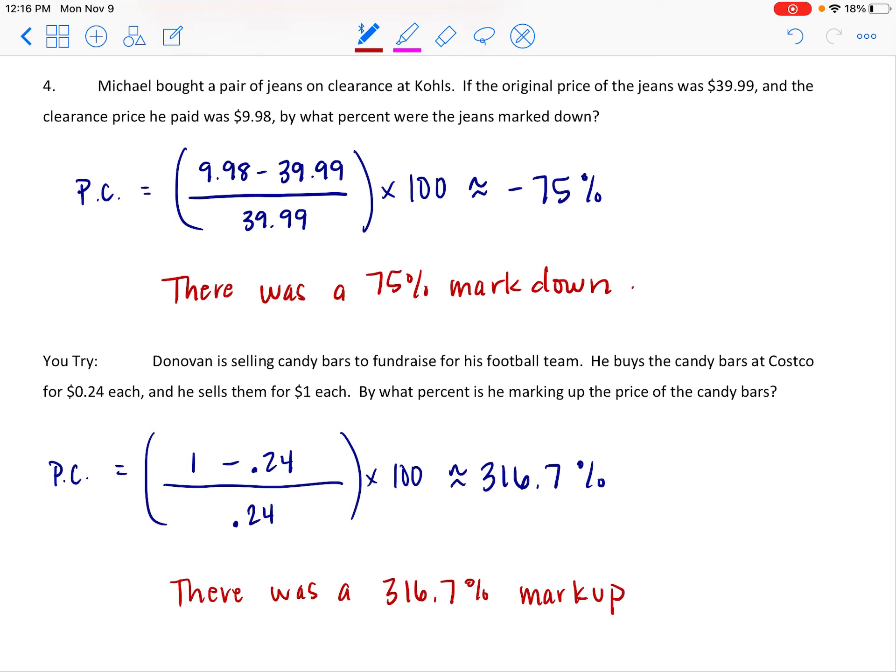Doesn't seem that bad because we're starting at a small amount, and then even with the markup, the total amount for the candy bar is a buck. It's like people aren't sweating the dollar, but it's a huge markup. In reality, a fair price for the candy bar would probably be 50 cents. You're still more than doubling your money, but hey, Donovan, if you can raise all that money for your football team, more power to you.